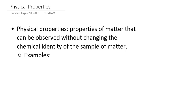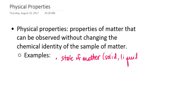A common physical property is its state — the state of matter. What I mean by that is: is it a solid, a liquid, or a gas? For example, suppose that the sample of matter I'm studying is a cube of ice. My understanding that the cube of ice is a solid does not change that I'm looking at a cube of ice. So for that reason, the state of matter for that cube of ice would be considered a physical property.